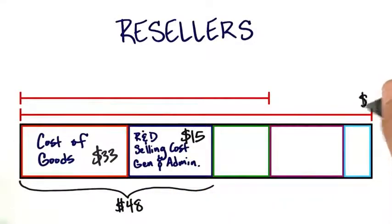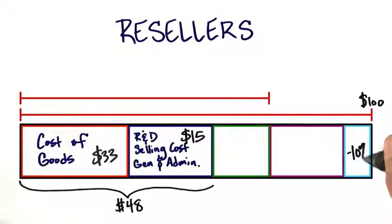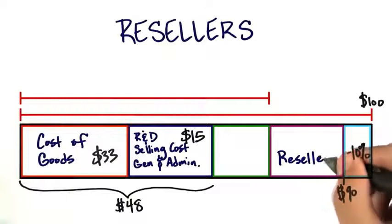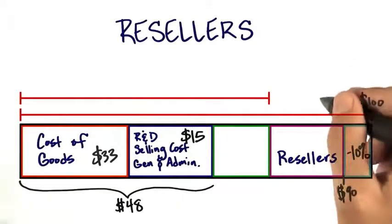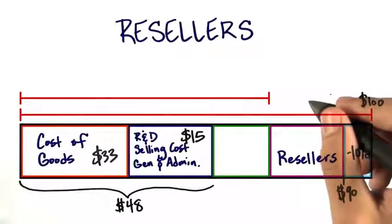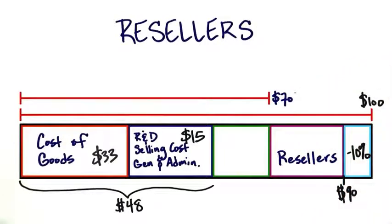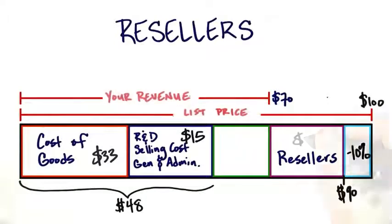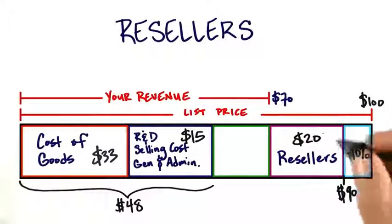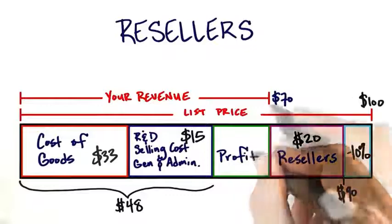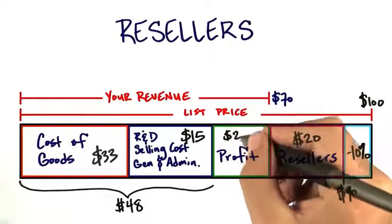Just like before, our list price is $100, and in the store the end user expects maybe a 10% discount, so the revenue to the sales channel is $90. But this time we have resellers — they don't work for us, they're the ones actually selling the product. They take the difference between $90 and $70, which they're going to pay us. So their profit is $20 for carrying, stocking, and reselling our product, and our profit is just $22.